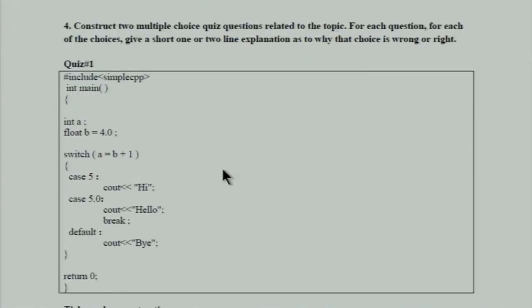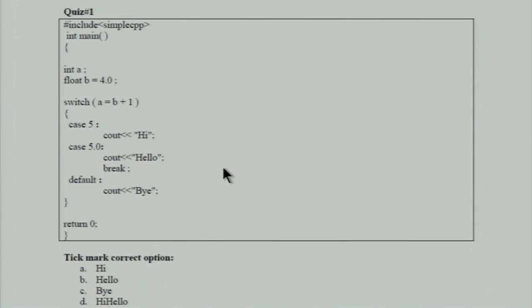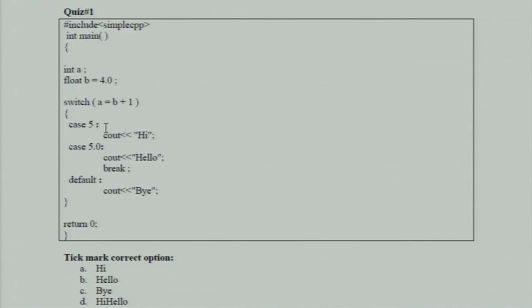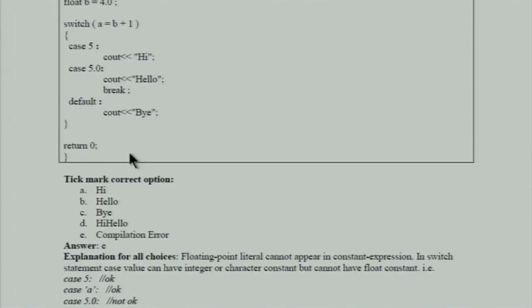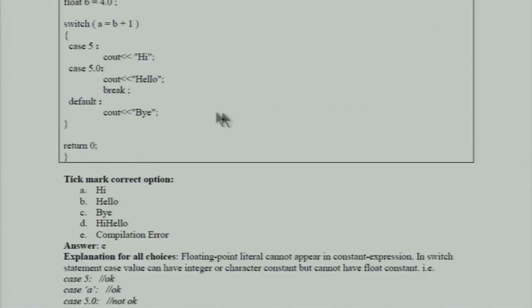We have taken two quiz questions. The first question uses an integer variable a and a float b = 4.0. In the switch, we write a = b + 1. Cases are 5 and 5.0. The output will be a compilation error because inside the switch case, 5.0 has been used, which is not allowed — floating point values are not allowed in switch cases. This is a tricky question.